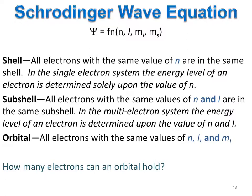In the multi-electron system, the shell is designated by all the electrons that have the same value of n. In the single electron system, the energy level of an electron is determined solely by this value of n. That is not the case for the multi-electron system. In the multi-electron system, the subshell determines the energy of the electron.